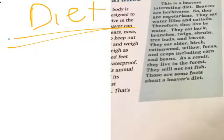They eat elder birch, cottonwood, willow, ferns, and crops including corn and beans. As a result, they live in the forest. They will not eat fish. Those are some facts about a beaver's diet. Thank you.